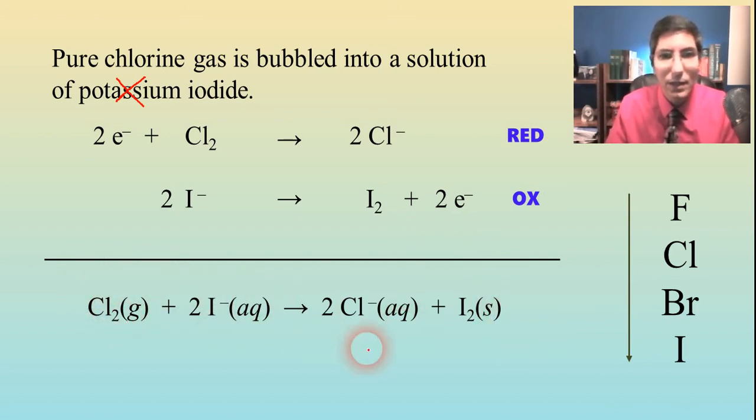Remember, chlorine is a gas, whereas iodine is actually a solid on the periodic table. And the ions, of course, are aqueous.